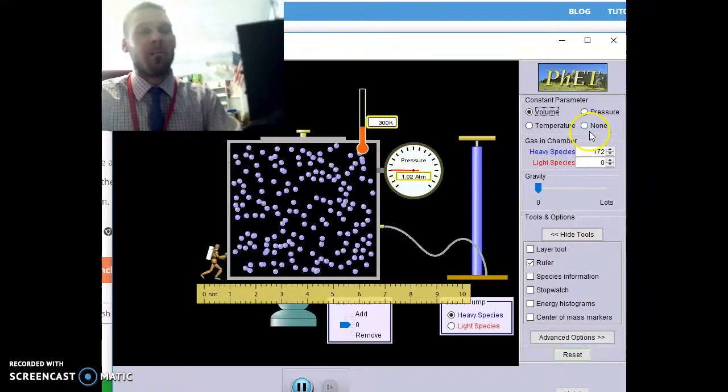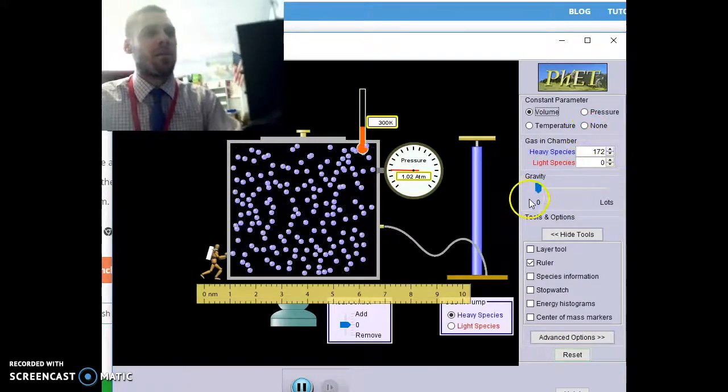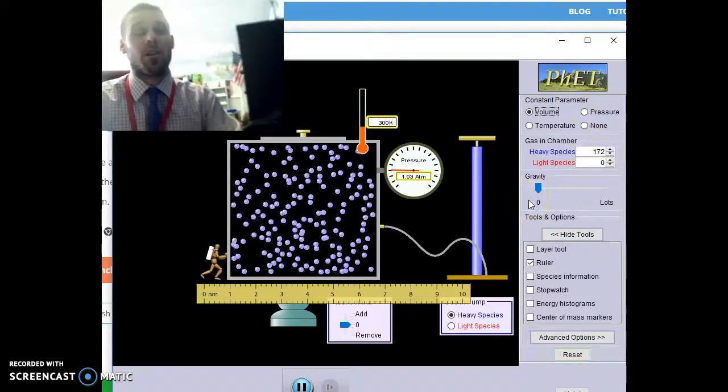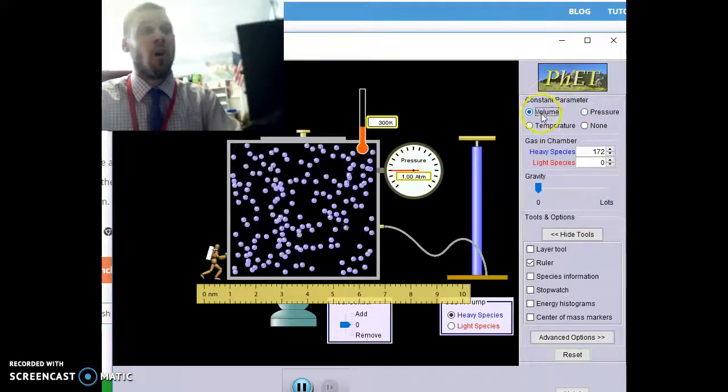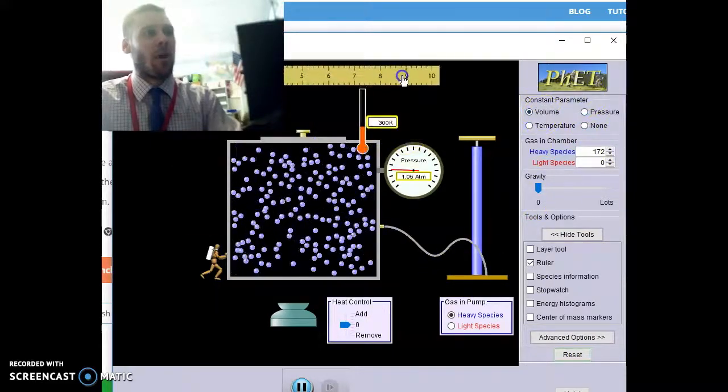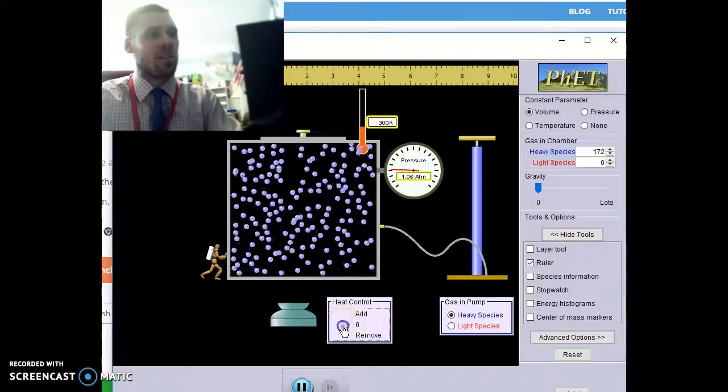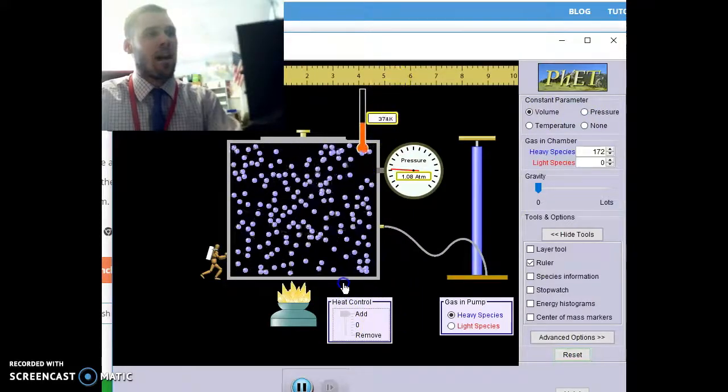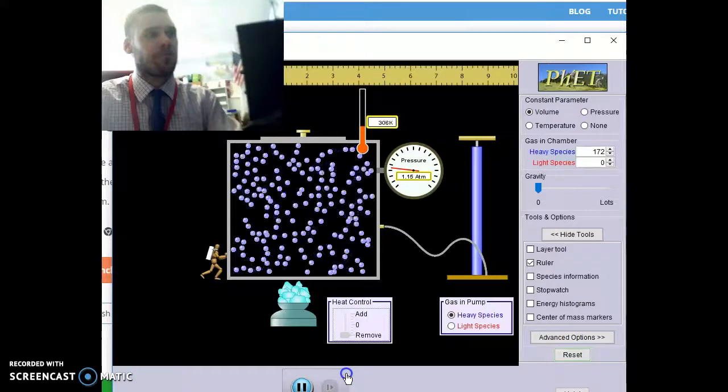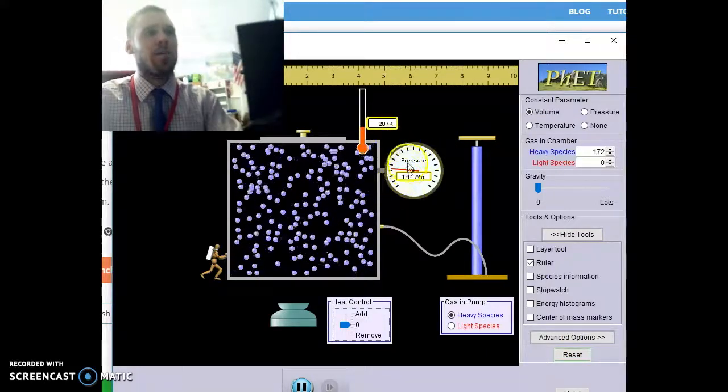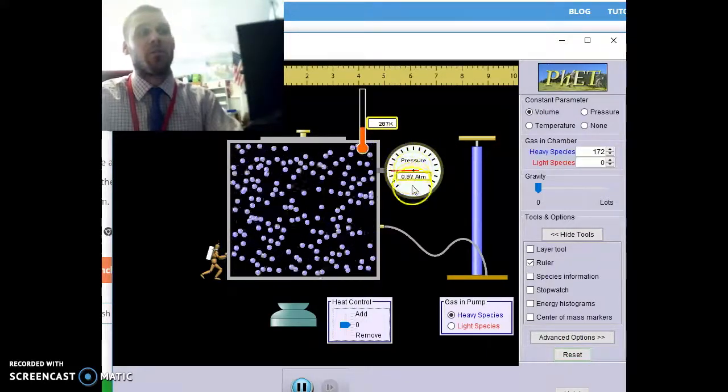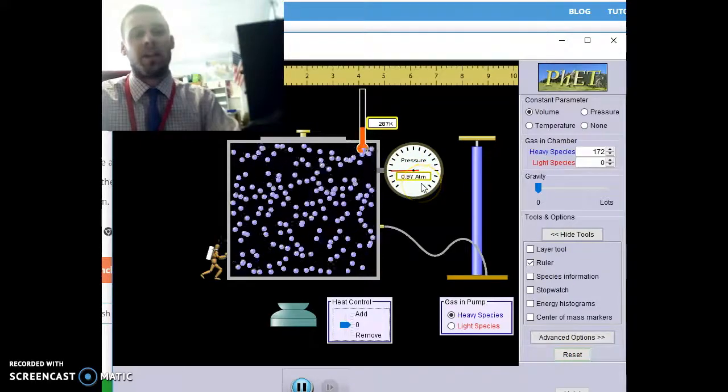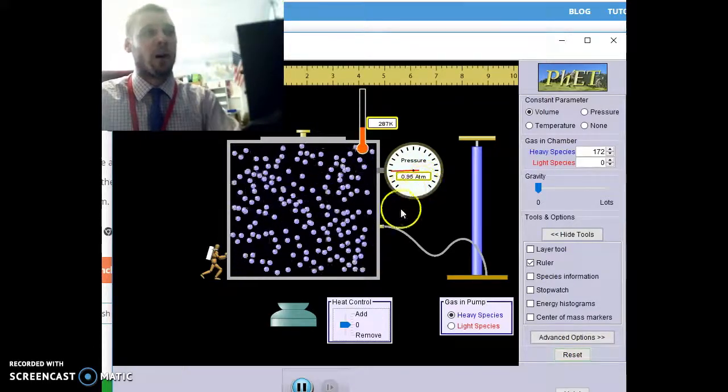The final one is going to be Guy Lussac's law, and that's going to be the relationship between temperature and pressure while holding volume constant. So I'm going to go ahead and change the temperature to 10 different data points. You can add or remove heat. Choose 10 different data points and find how pressure is going to respond to those 10 sets of data. That's going to be your fourth and final graph.